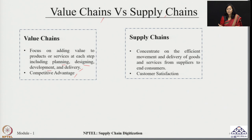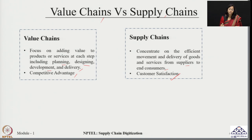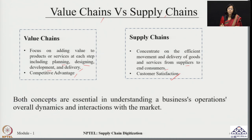When we talk about supply chains, the supply chain mainly focuses on the efficient movement and delivery of goods and services from the suppliers to the end customer. It is more about how these products are produced and transported from suppliers to end consumers, with the focus on ensuring that the customer is satisfied and the product has reached them in the right manner. Both these concepts are essential in understanding a business's overall operational dynamics and interactions with the market.